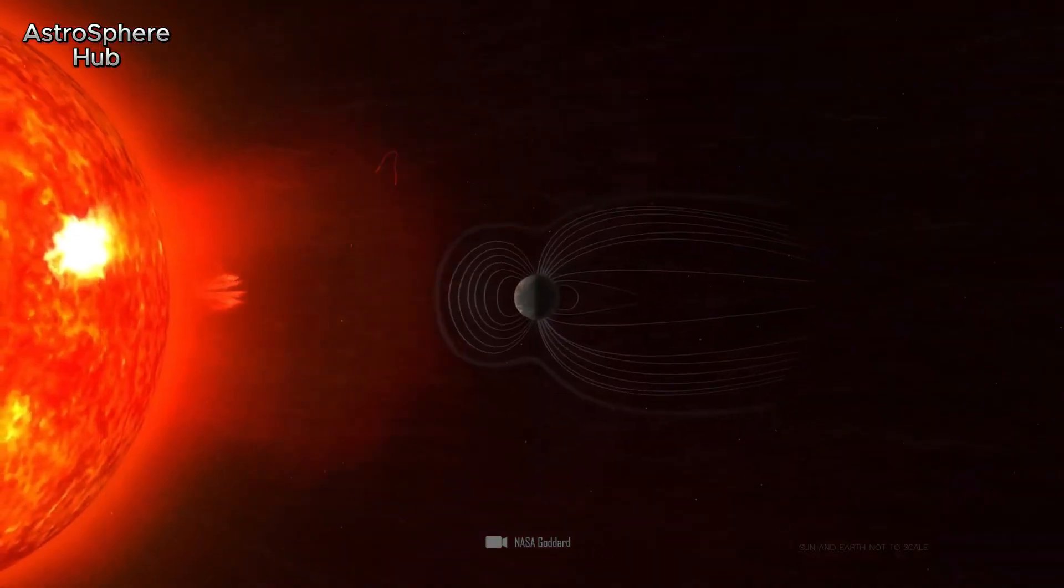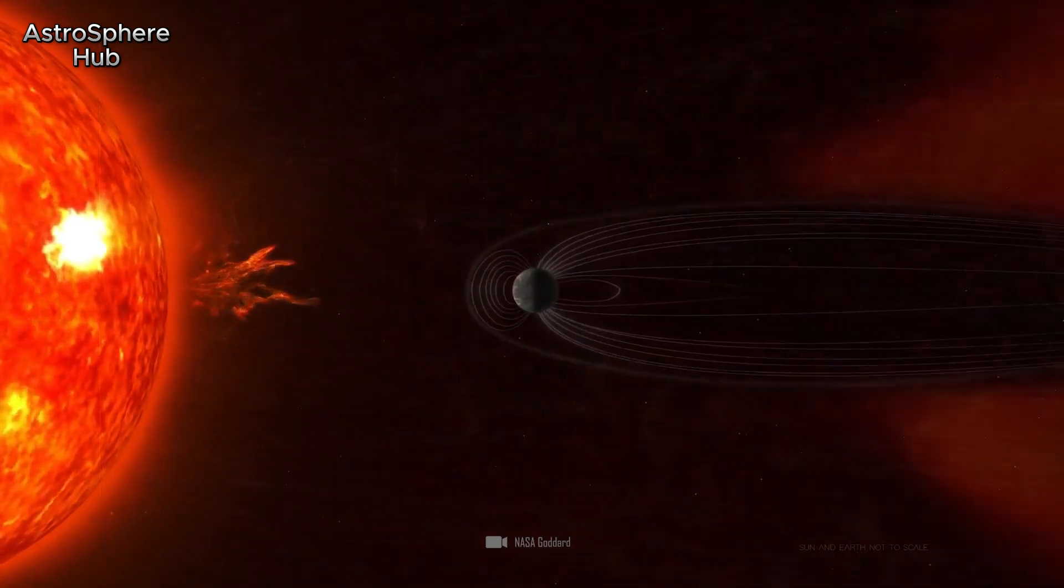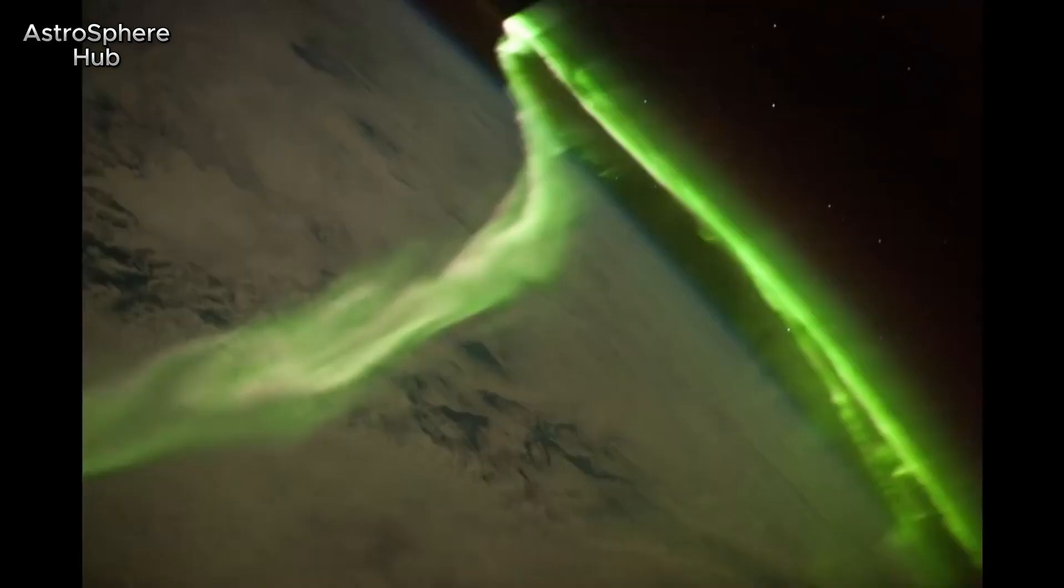The plasma stream hit the Earth unusually quickly. Today, experts suspect that the intensity indicates a coronal mass ejection, which was then propelled very quickly towards Earth.